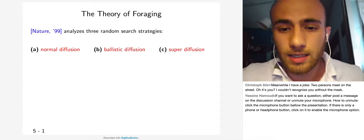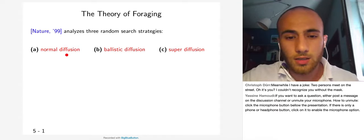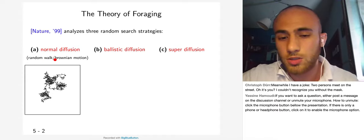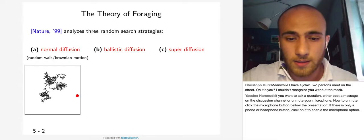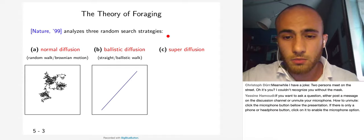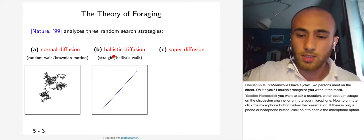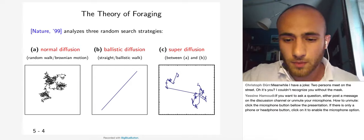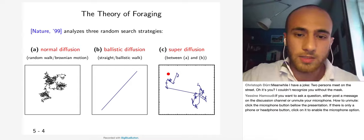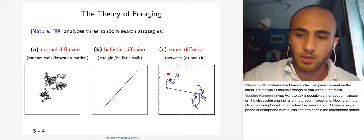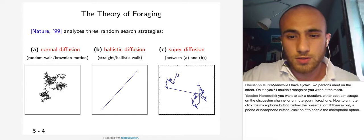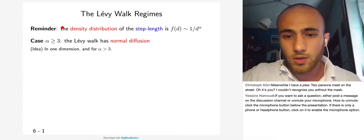There is an important paper in Nature from 1999 that analyzes three random search strategies leading to normal diffusion, ballistic diffusion, and super diffusion. Normal diffusion is obtained from the simple random walk or Brownian motion. Ballistic diffusion is obtained from a straight walk where the walker follows a straight path. Super diffusion is something in between. The Lévy walk, depending on the parameter alpha that defines the power law density distribution, can lie in each of these three diffusion regimes.